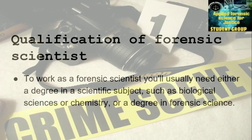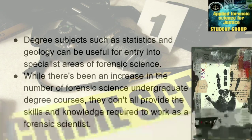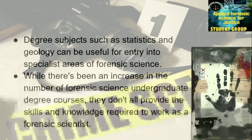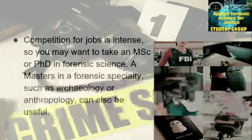Next is the qualification of forensic scientist. To work as a forensic scientist, you will usually need either a degree in a science subject such as biological sciences or chemistry, or a degree in forensic science. Degree subjects such as statistics and geology can also be useful for entry into specialist areas. While there has been an increase in forensic science undergraduate degree courses, they don't all provide the skills required. Competition for jobs is intense, so you may want to take an MSc or PhD in forensic science.